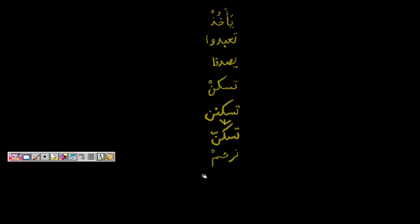Number five, نَرْحَمُ, becomes نَرْحَمْ. Then أَجْعَلُ becomes أَجْعَلْ. تَأْكُلُ becomes تَأْكُلْ. And تَأْلَمْنَ — the feminine plural — the noon does not drop, so there is no change; it remains تَأْلَمْنَ even when majzoom.